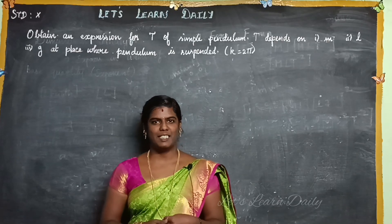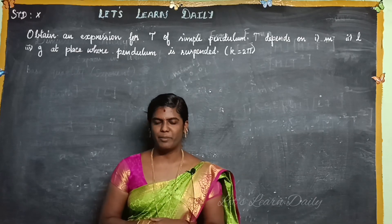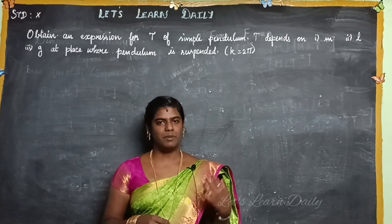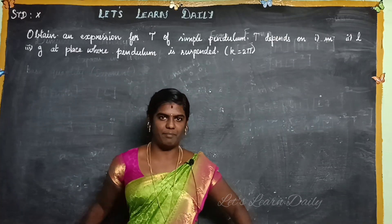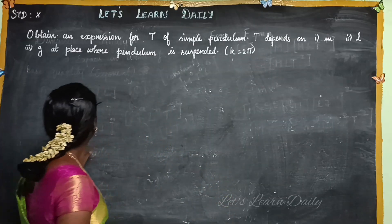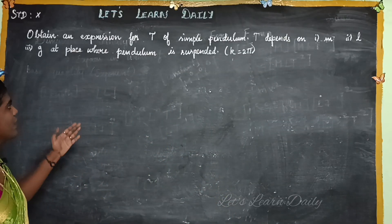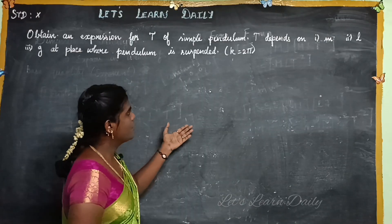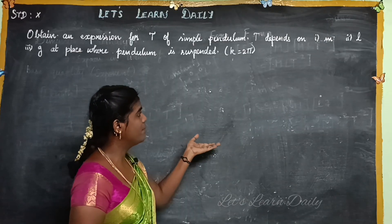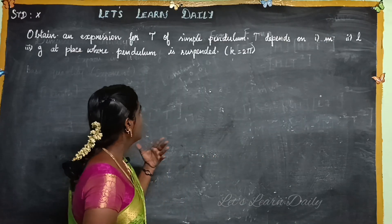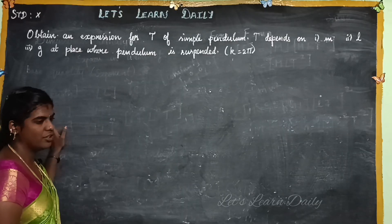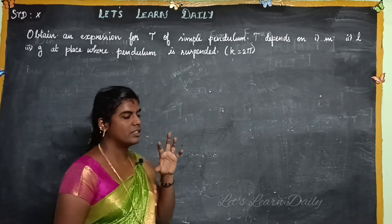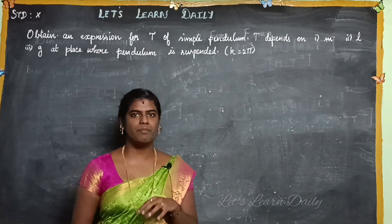Hi everyone, welcome to our channel, Let's Learn Daily. In this video we are going to do the 11th standard first lesson, example 15. The question is: obtain an expression for the time period T of a simple pendulum. The time period depends on the mass, the length of the pendulum, and the acceleration due to gravity at the place where the pendulum is suspended.